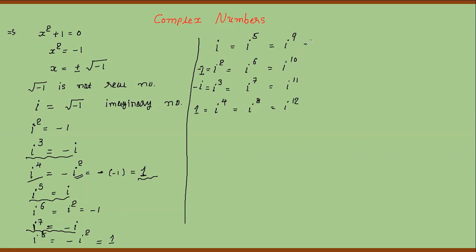Here we see that the powers 1, 5, 9 all give iota — these are powers where dividing by 4 gives remainder 1. So if iota's power is of the form 4k+1, the value is iota. The answer depends on the remainder when the power is divided by 4.